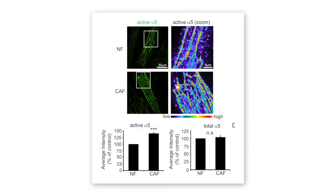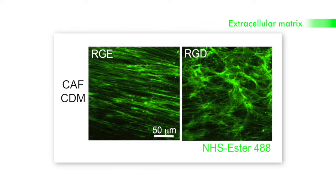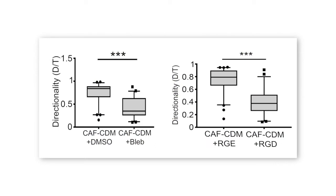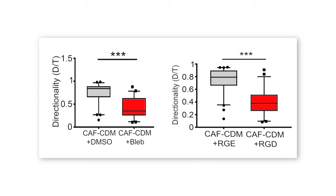They first looked at alpha-5-beta-1 activity using specific antibodies that recognise the active conformation of the receptor, and found that CAFs have increased staining for active alpha-5-beta-1 integrin. Blocking alpha-5-beta-1 integrin using function-blocking antibodies decreased traction forces. They also found that alpha-5-beta-1 integrin is responsible for fibronectin matrix assembly and organisation by CAFs. Disrupting this aligned matrix organisation by inhibiting either myosin-2 or alpha-5-beta-1 integrin reduced the ability of CAFs to guide the directional migration of cancer cells.